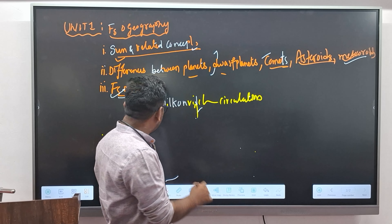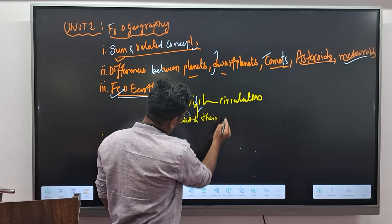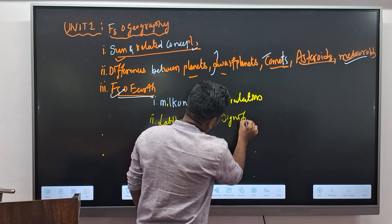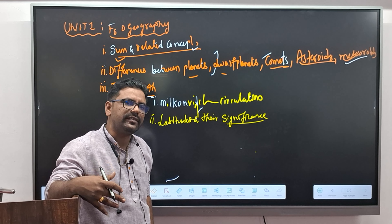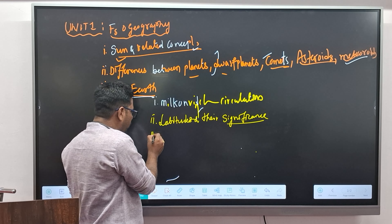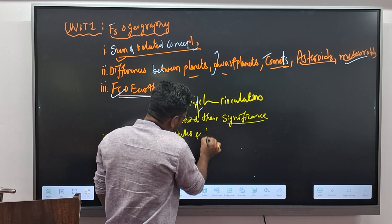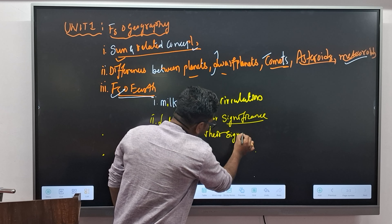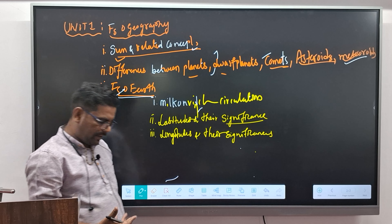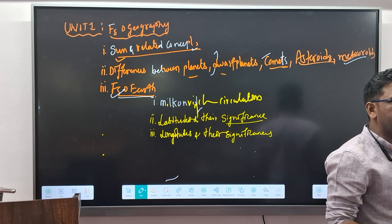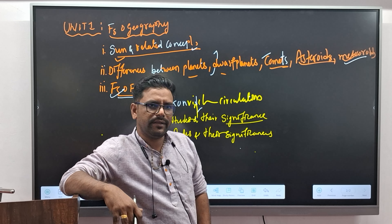The third thing we have to learn here is the fundamentals of Earth. What we have discussed so far is related to things other than Earth. We will also discuss what types of planets we have, and after that, what we have to understand is the fundamentals of Earth. In this section, the first topic is Milankovitch cycles.